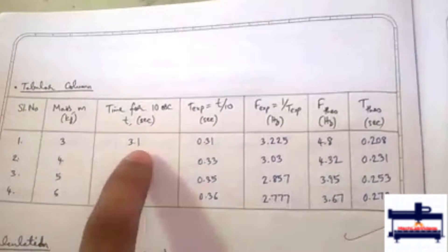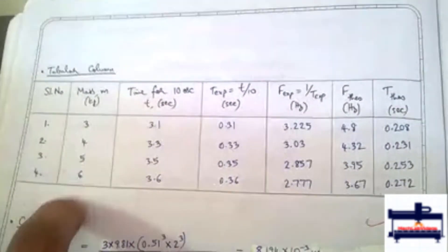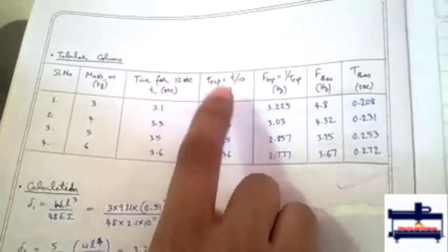For 10 such vibrations, we find out what is the time taken. In this tabular column, we enter the mass first, then time for 10 oscillations. This reading is taken for 3, 4, 5, and 6 kg. And then the time period first is experimental.